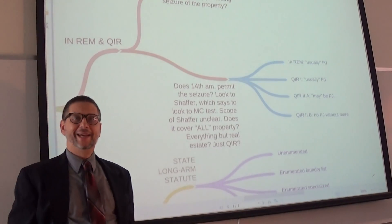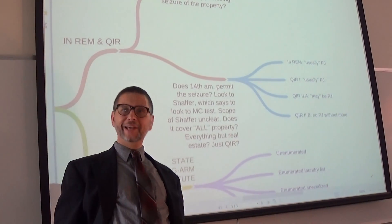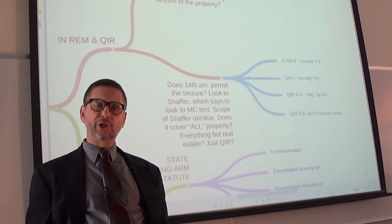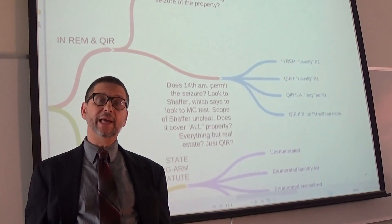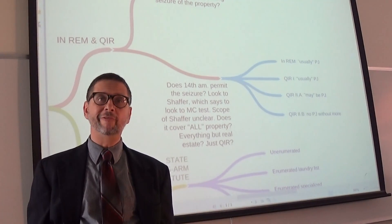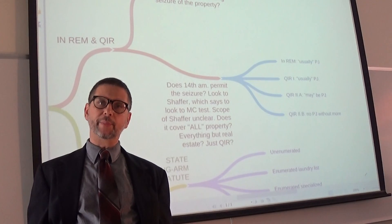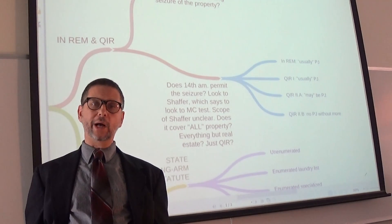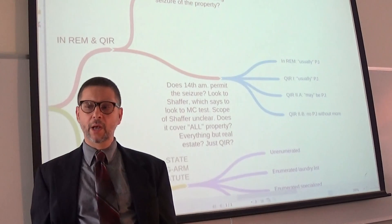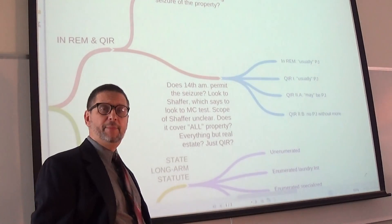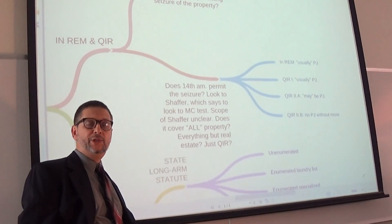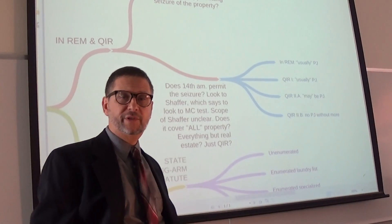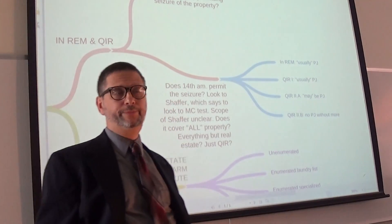Hello, welcome back. Here's yet another video, and what we're going to be talking about right now is state court assertions of personal jurisdiction — or I should say state court assertions of jurisdiction over property. So we're talking in rem jurisdiction and quasi in rem jurisdiction. Keep in mind that this analysis also applies to federal courts to the extent that you can use Federal Rule of Civil Procedure 4 and 2.